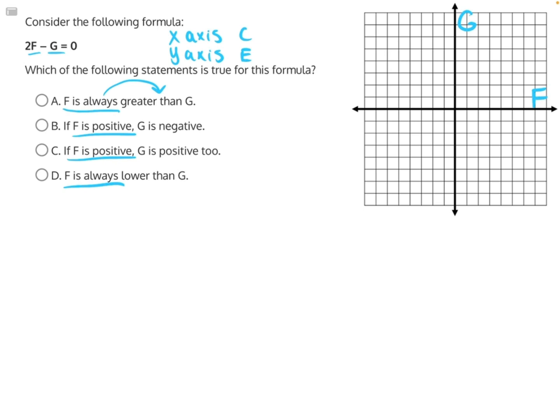Now there's one more thing before we start to graph this, and that's rearranging this function so that it's a bit easier to work with. G is being subtracted, so we can do opposite operations and add G to both sides. This will cancel, leaving us with 2F equals G. It's a bit easier to work with.